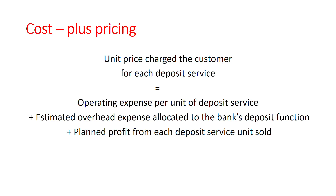Cost plus pricing example: operating expenses 4 rupees, overhead expenses 1.5 rupees, profit margin 8% monthly. So: operating expenses 4 rupees plus overhead 1.5 rupees equals 5.5 rupees, plus 8% profit margin.